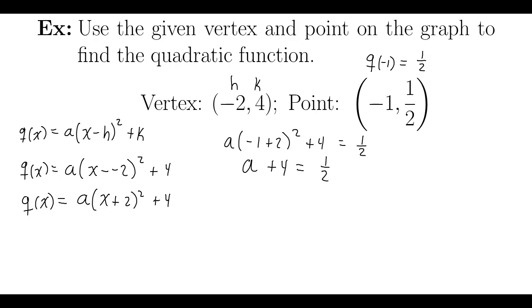Subtract 4 from both sides. 1 half minus 4, or 4 over 1. Let's find a common denominator, which would be 8 over 2. And if I subtract 1 half minus 8 over 2, I have negative 7 over 2.